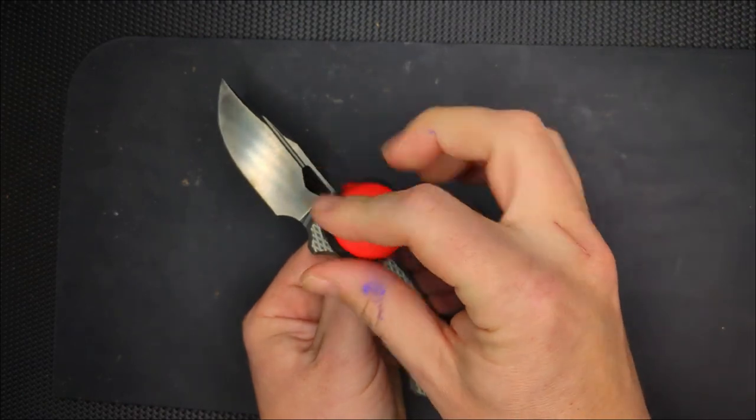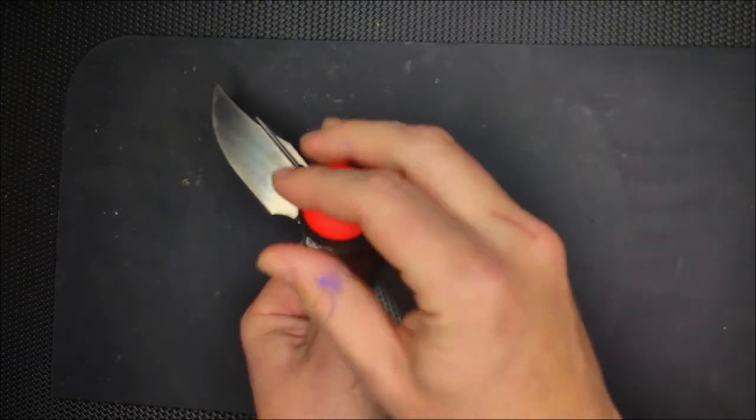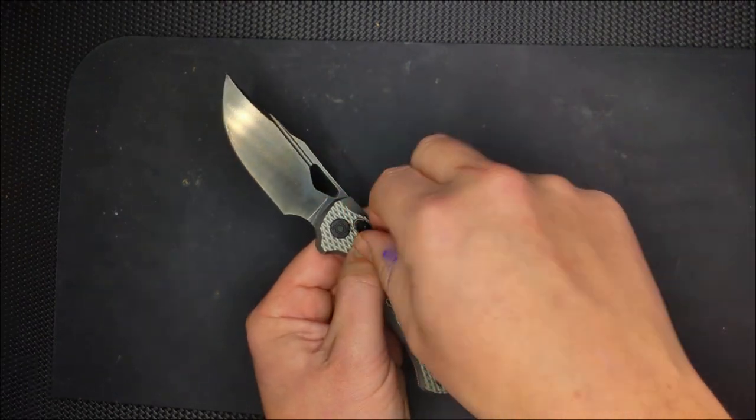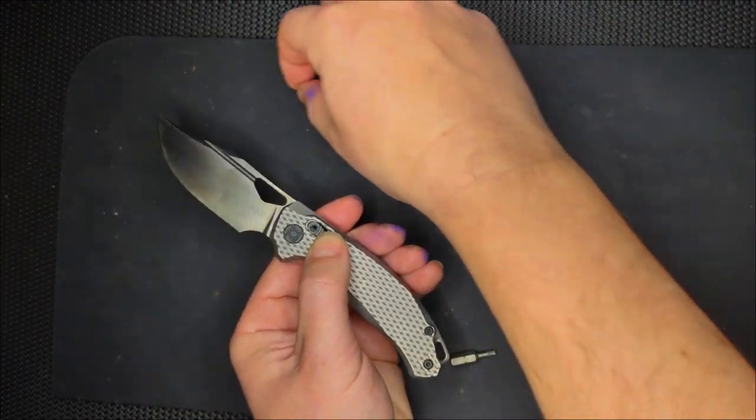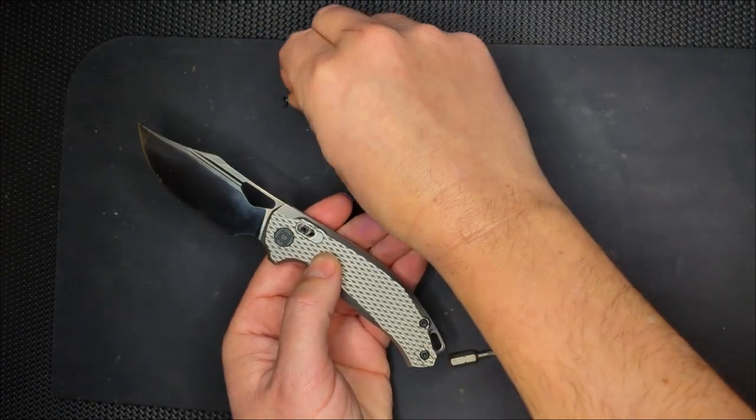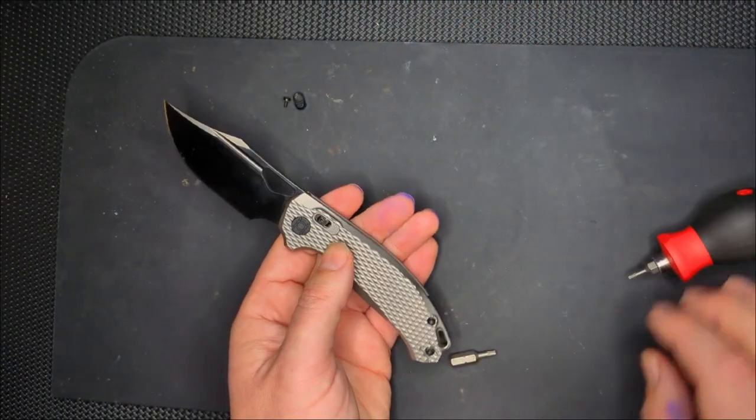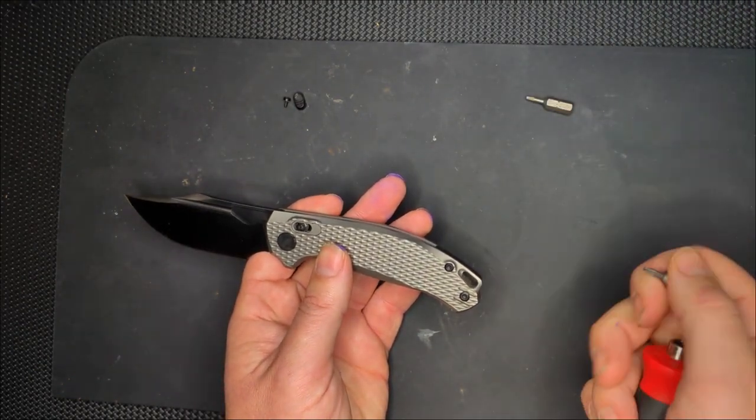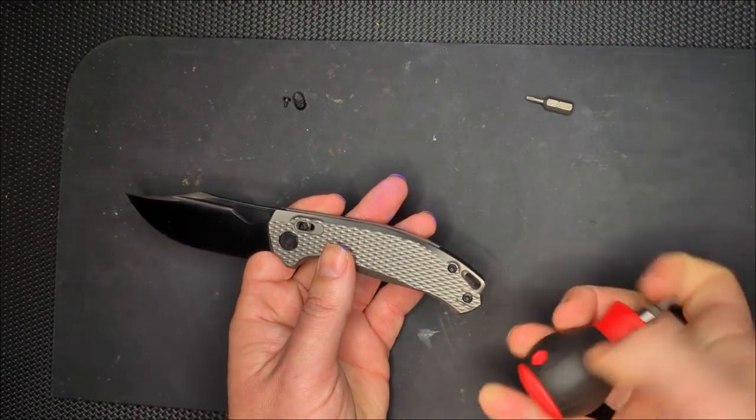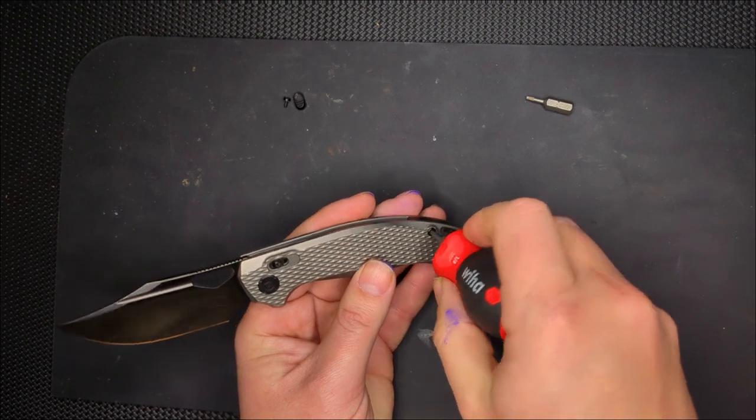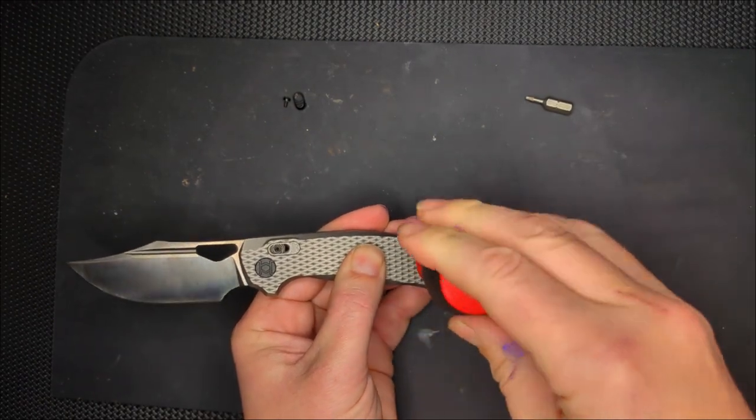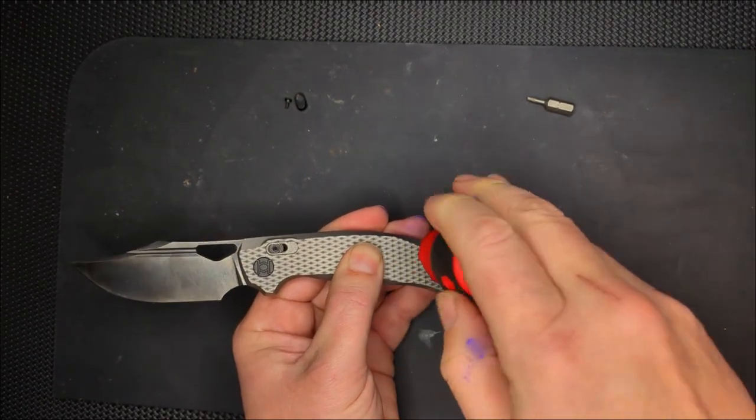So, I am going to unscrew the thumb stud first. It doesn't feel like there was any Loctite on that, which is fine for the bar lock. I don't think you need Loctite on the bar lock, and that comes off there, and I'm going to put this up here with its little mate right there. So, now that's off, and next I am going to go ahead and switch out to the T8, which should be everything else on this knife.